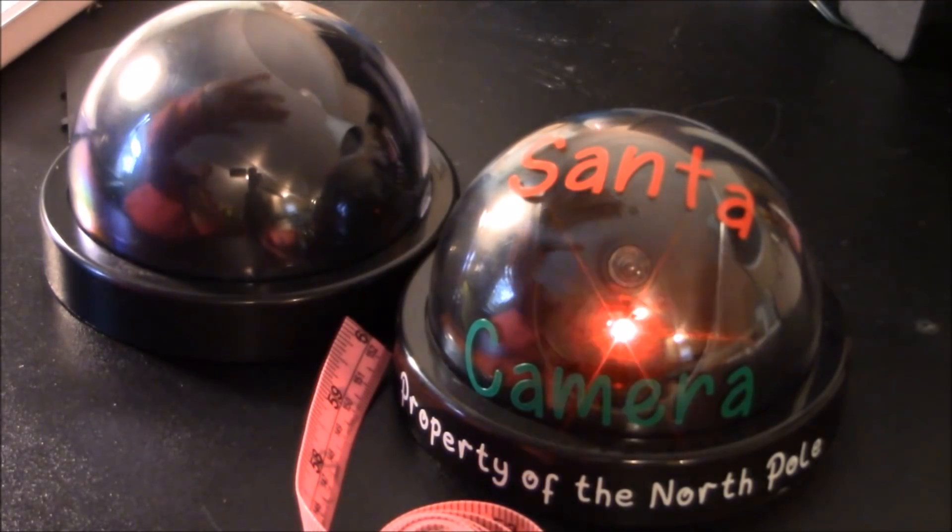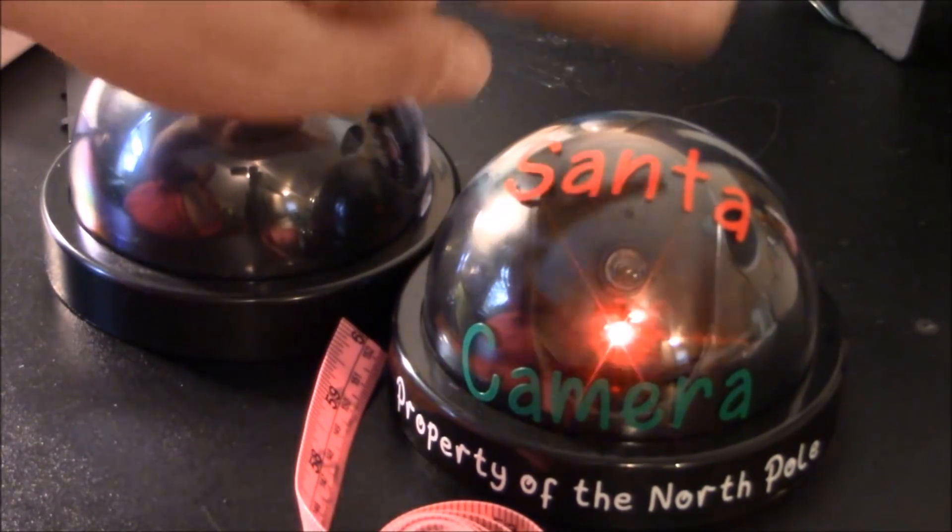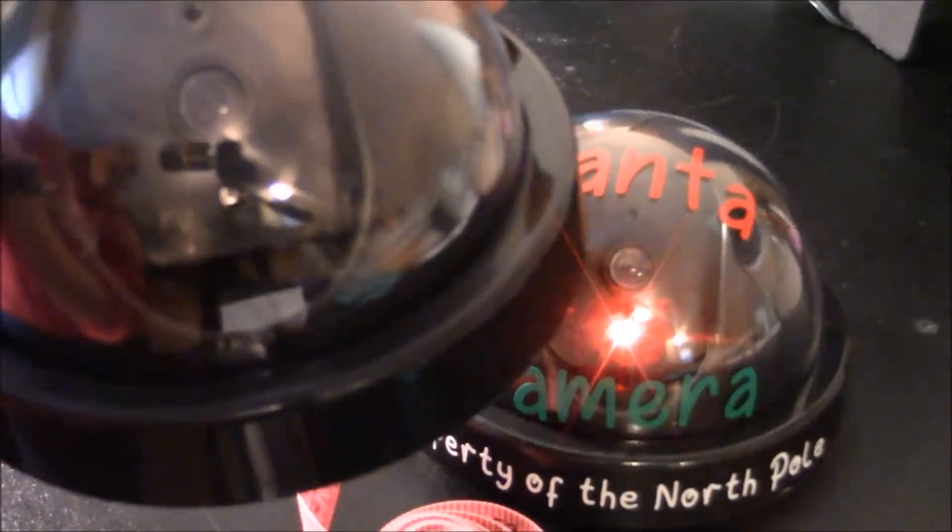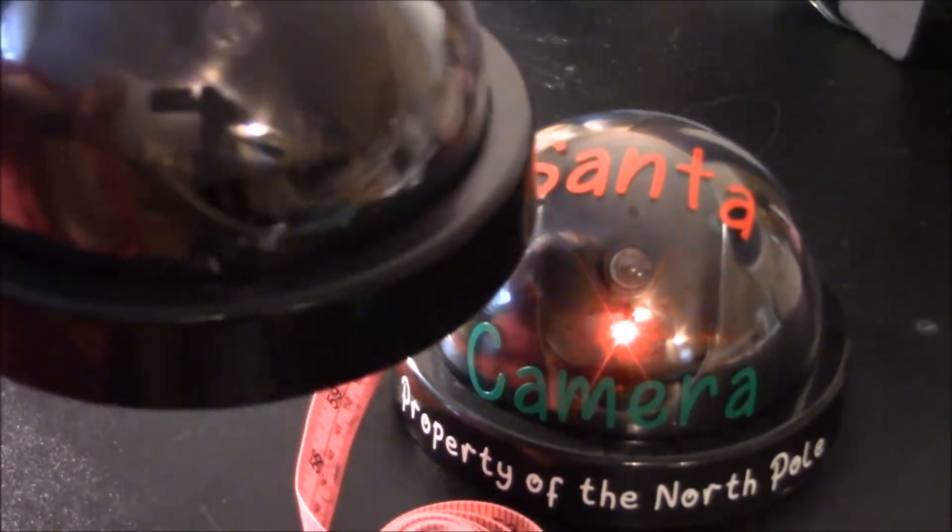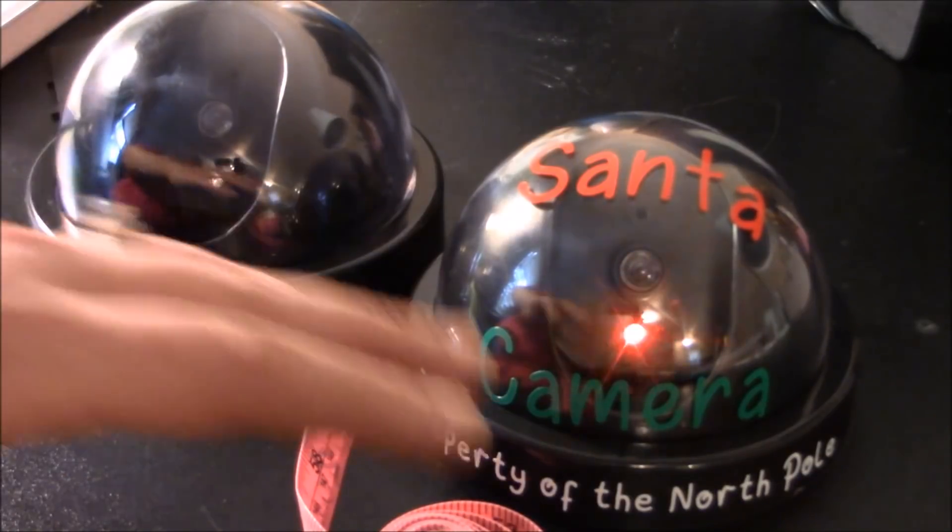Today we're going to make these really cute Santa Cams. These are from Amazon and they are just fake cameras. So this one's obviously already done and the batteries are in. These take AA batteries right here in the bottom for the blinking red light. You can get a pack of four of these for about $15.99 and they're really fun and really easy to work with.